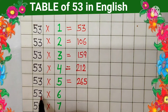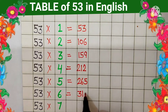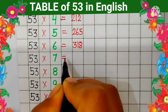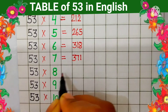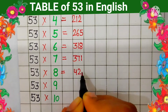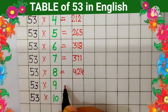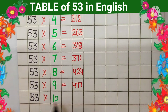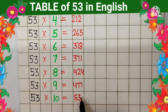53 sixes are 318, 53 sevens are 371, 53 eights are 424, 53 nines are 477, 53 tens are 530.